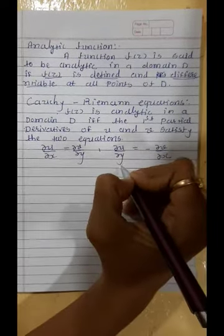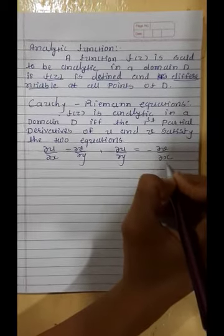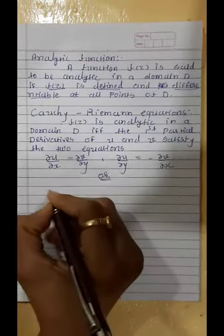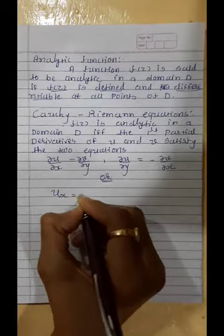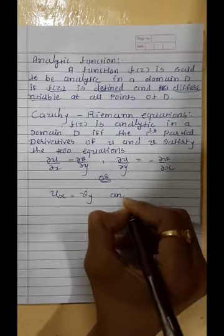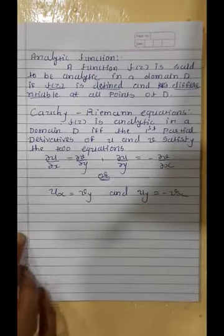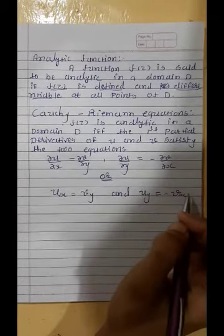These two conditions can also be written as uₓ = vᵧ and uᵧ = −vₓ. These two conditions are known as the CR equations, and if the CR equations are satisfied, we can say that the given function is analytic.